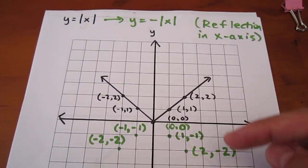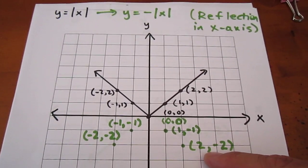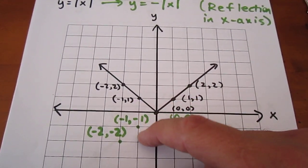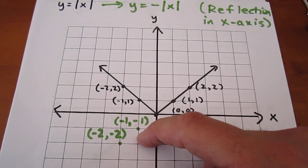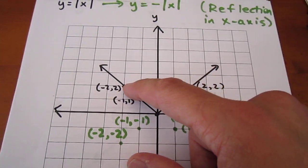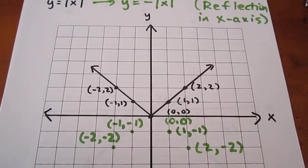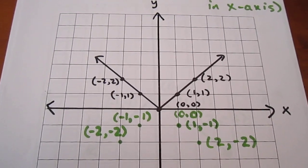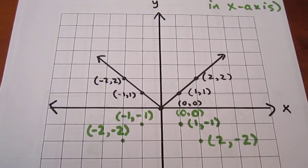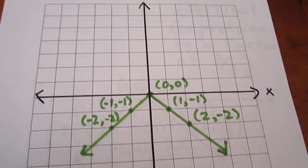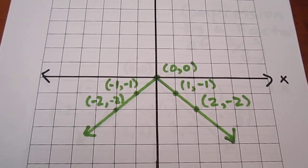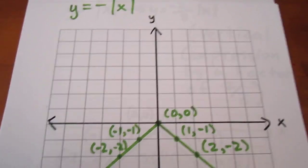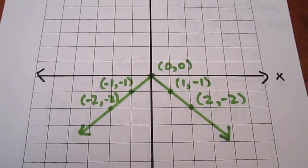And 2, 2 will have new coordinates of 2, negative 2. The image of negative 1, 1 will be negative 1, negative 1. And the image of negative 2, 2 will be negative 2, negative 2. We can now discard the black curve and focus on the green. We're one transformation in to our three transformation question.